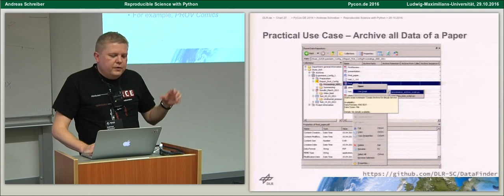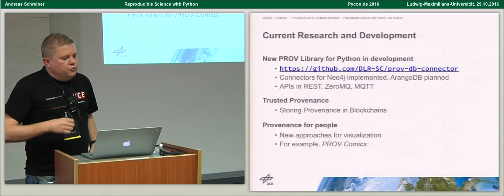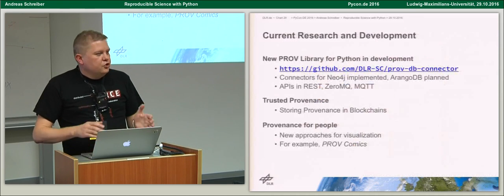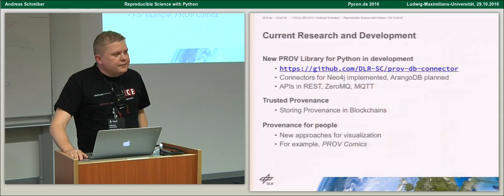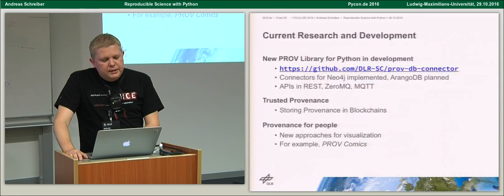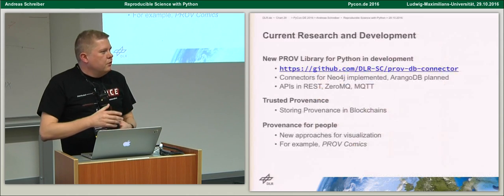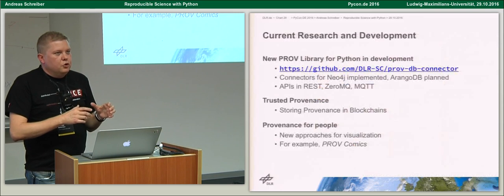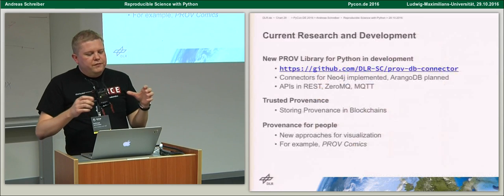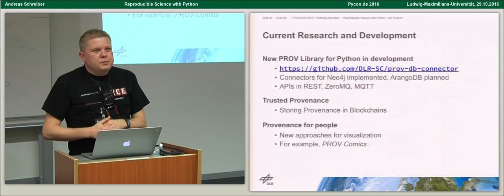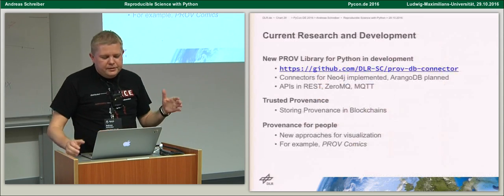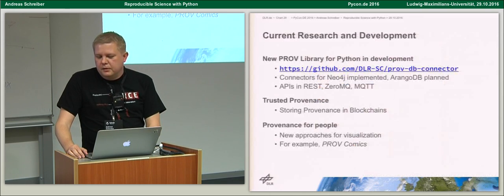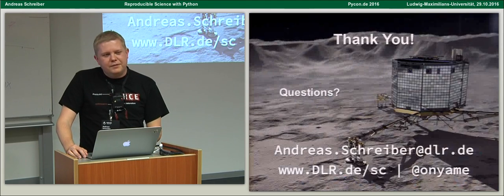What we are currently doing at DLR is writing a new PROV library in Python because the existing tools have some shortcomings. We want to test ArangoDB, and there are also APIs in REST, ZeroMQ, and MQTT for IoT applications. We also work on trusted provenance by storing provenance data in a blockchain database. And we're working on provenance for people — since the graphs aren't understandable by most people, one master student is working on generating comic strips from provenance data.